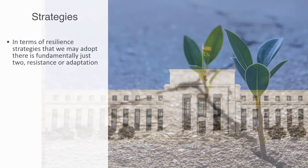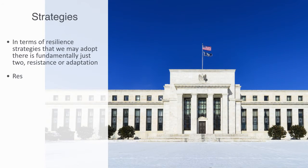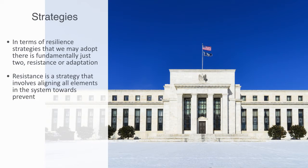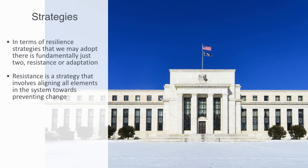Resistance is a strategy that involves aligning all elements in the system towards preventing change. Here, we're aiming to build up a store of resources, such as liquidity, fixed capital, or any form of redundancy, so that we can weather out some perturbation, or any failures can be identified at their source and quickly removed by superior force, typically through a centralized regulatory system that is monitoring the whole operation. Walter Bagehot, in his book Lombard Street, put it like this: